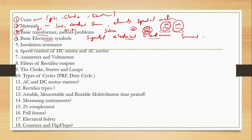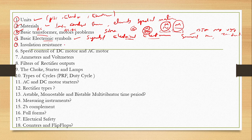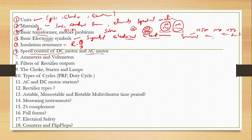Semiconductor symbols and transistor symbols — all semiconductors: BJT, MOSFET, UJT, and zener diodes, various types of diodes. These symbols will be discussed in this particular topic. Insulation resistance: R is equal to rho L by A. We will also discuss AC motor and DC motor speed control as a separate topic.